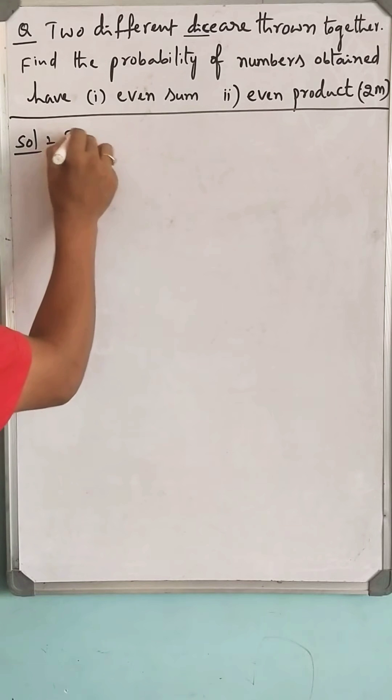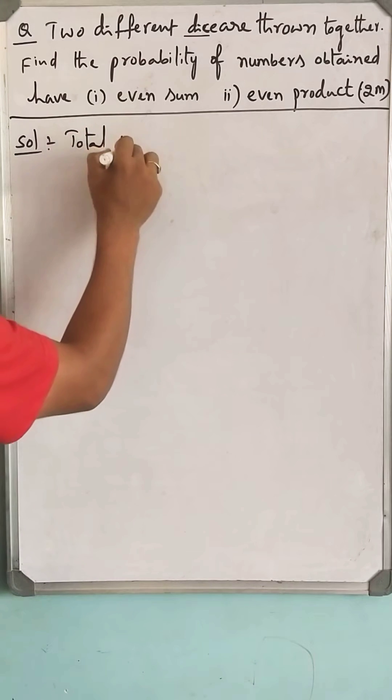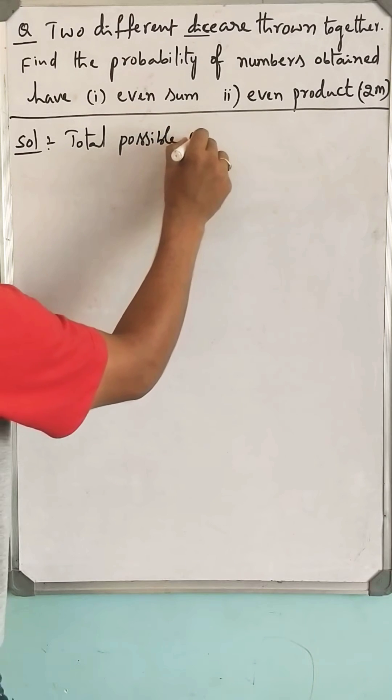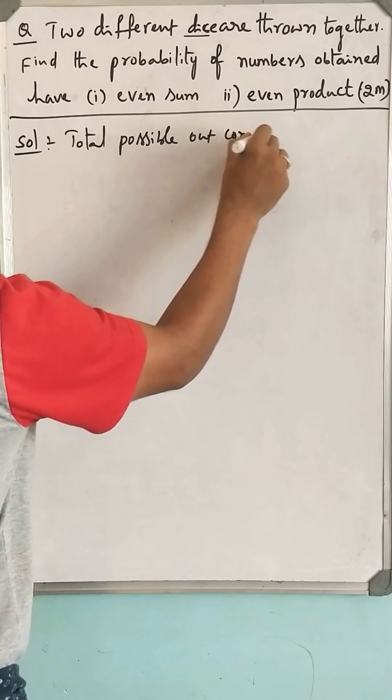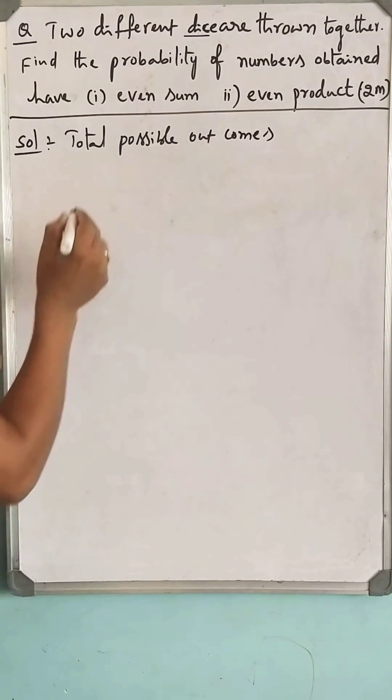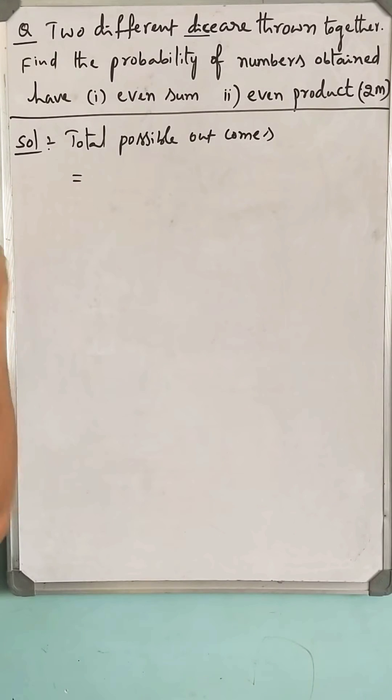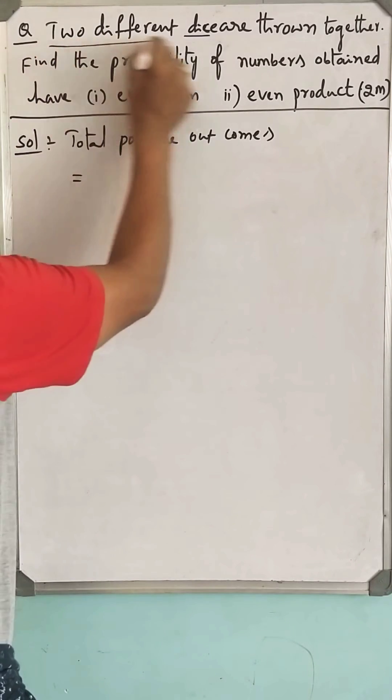Total possible outcomes. I am writing as ordered pair. See, two different dice are thrown.